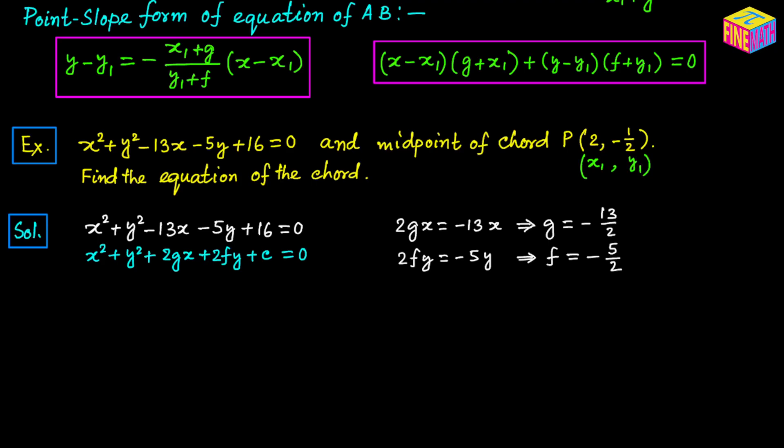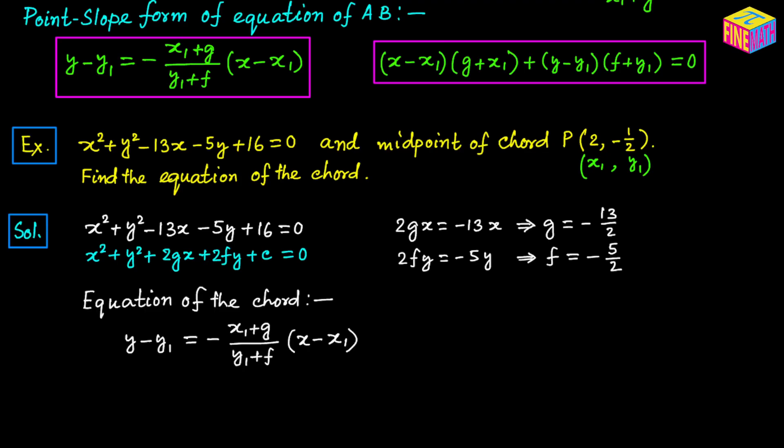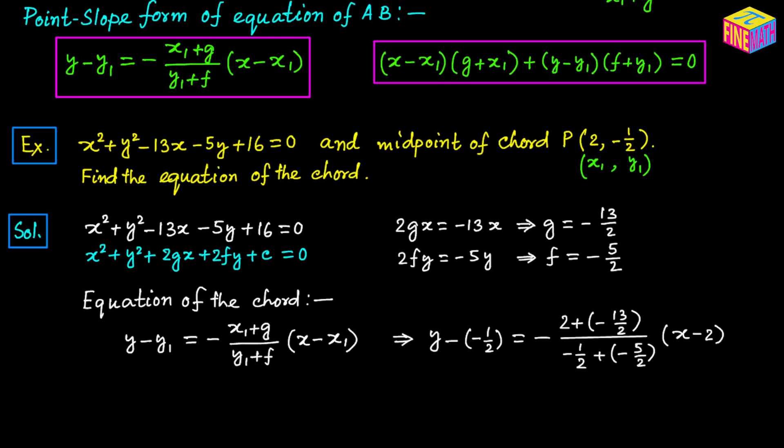Now let's find the equation of the chord using the point-slope form. Substituting into y minus y sub 1 equals negative (x sub 1 plus g) over (y sub 1 plus f) times (x minus x sub 1): y minus (negative 1 half) equals negative (2 plus negative 13 over 2) over (negative 1 half plus negative 5 over 2) times (x minus 2). With y sub 1 equal to negative 1 half, x sub 1 equal to 2, g equal to negative 13 over 2, and f equal to negative 5 over 2.